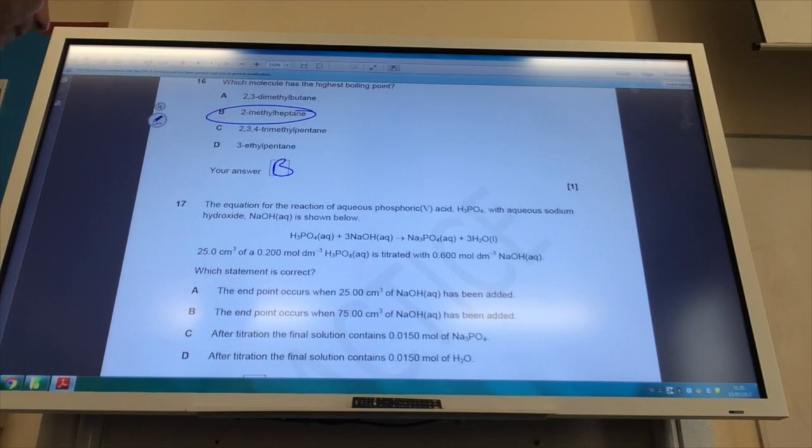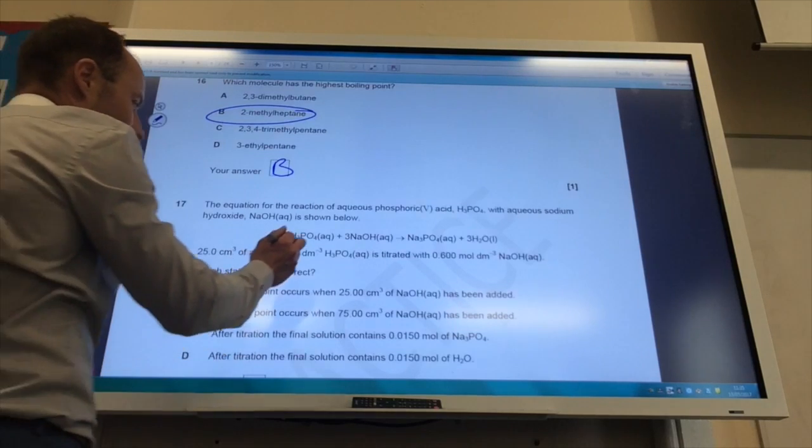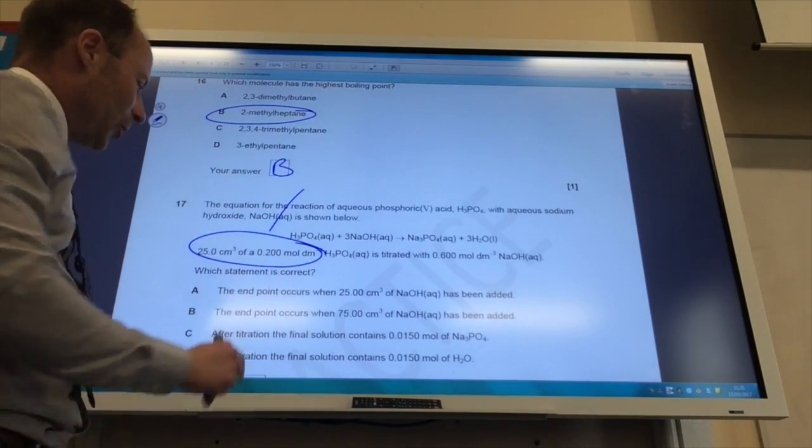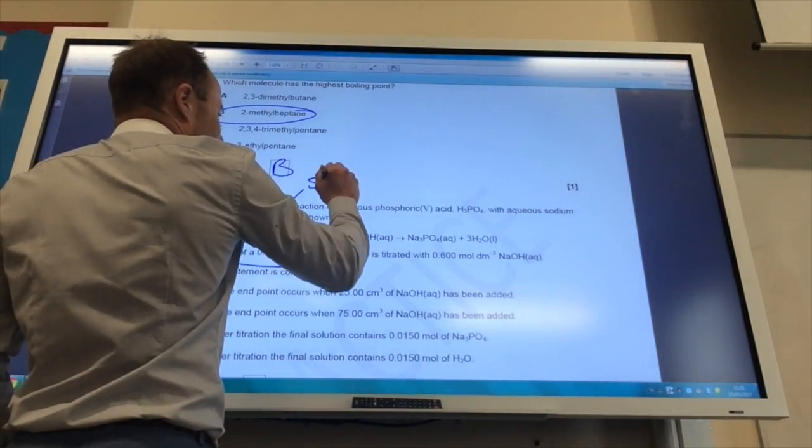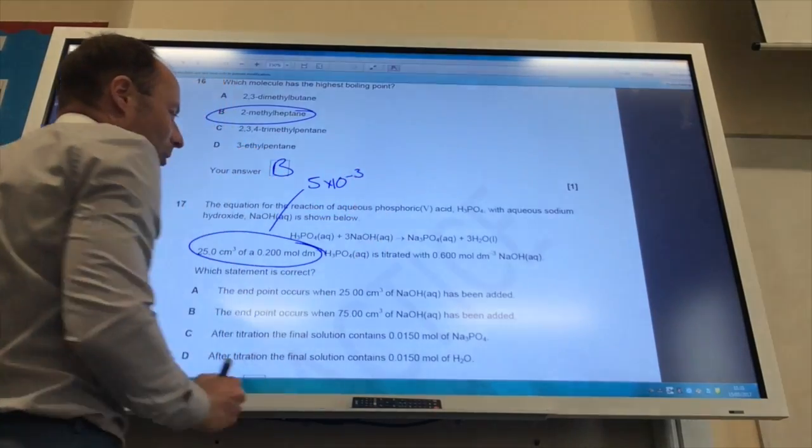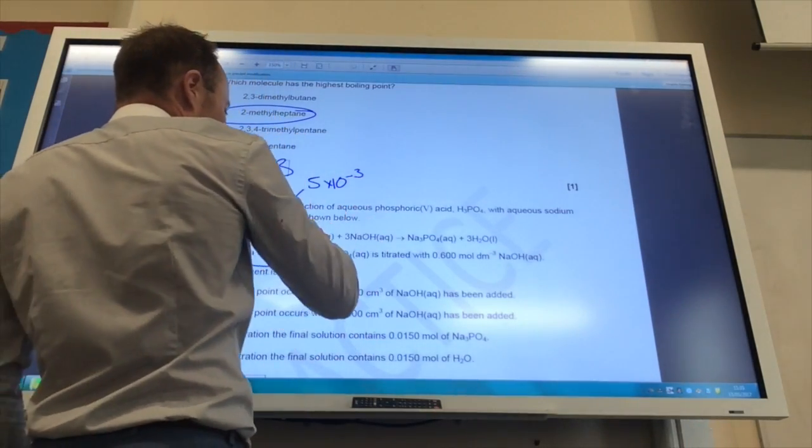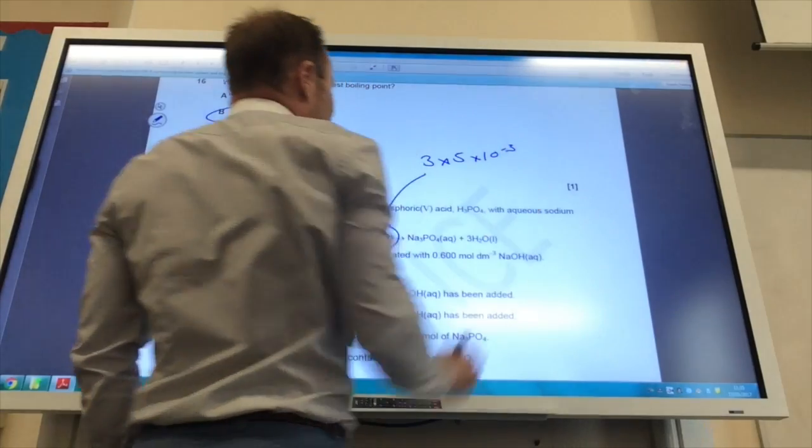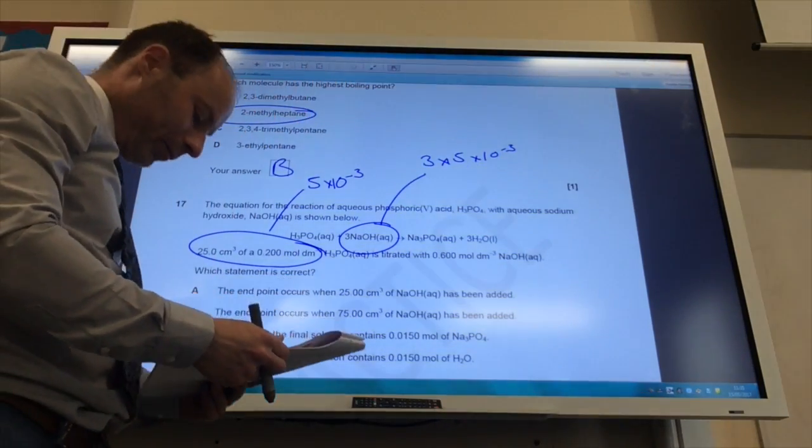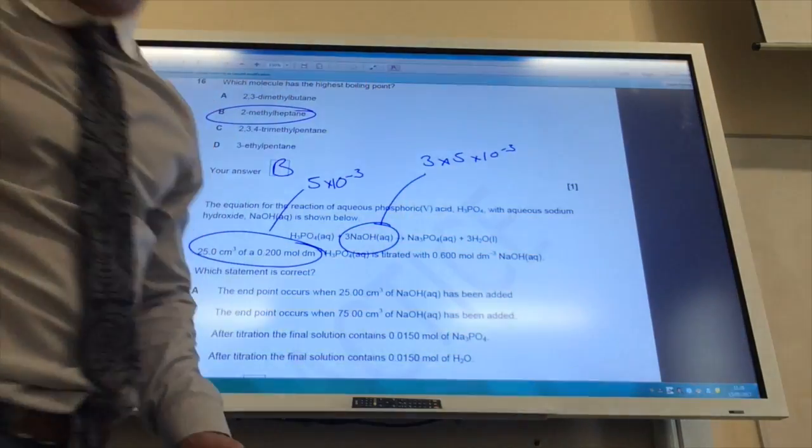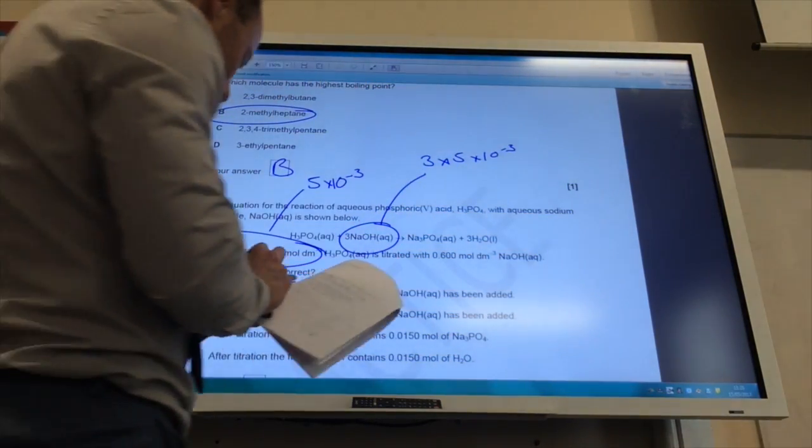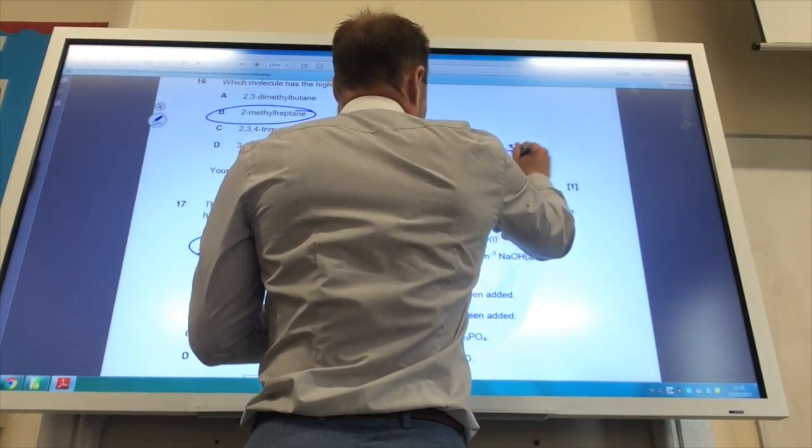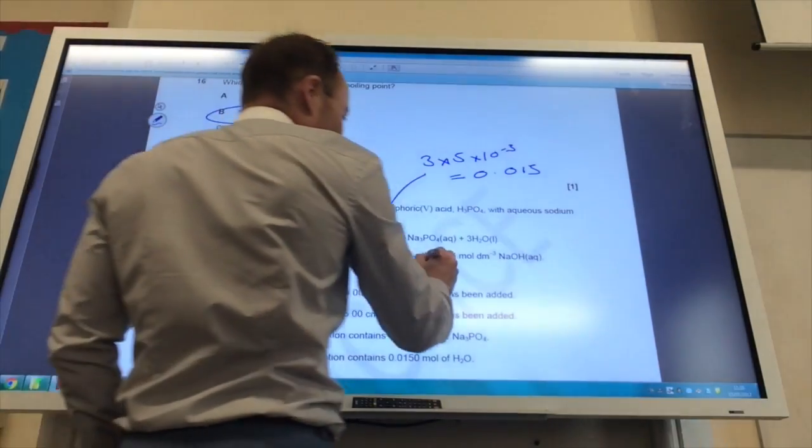Which statement is correct from the following? First, if you work out the number of moles in that, which is concentration times volume over 1,000, that comes to 5 times 10 to the minus 3 moles. For every one of those, you need 3 of those, so 3 times 5 times 10 to the minus 3 moles. So 3 times 5 times 10 to the minus 3 gives you 0.015 moles. They told you the concentration